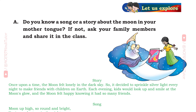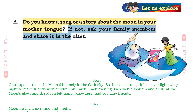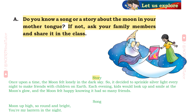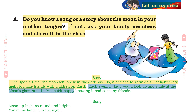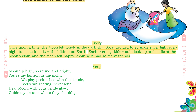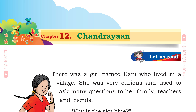Let us explore. A. Do you know a song or a story about the moon in your mother tongue? If not, ask your family members and share it in the class. Story: Once upon a time, the moon felt lonely in the dark sky. So it decided to sprinkle silver light every night to make friends with children on earth. Each evening, kids would look up and smile at the moon's glow, and the moon felt happy knowing it had so many friends. Song: Moon up high, so round and bright, you are my lantern in the night. We play peek-a-boo with the clouds, softly whispering, never loud. Dear moon, with your gentle glow, guide my dreams where they should go.